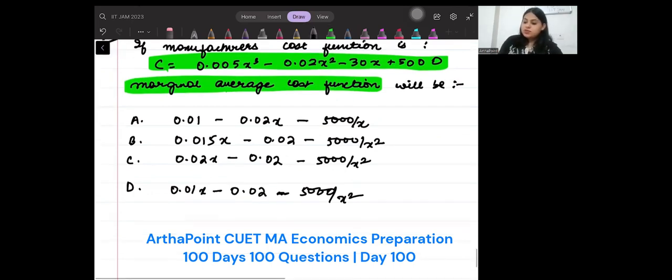Let us try to solve this. So total cost will be given by 0.005x³ - 0.02x² - 30x + 5000. This is given to you, a total cost function.